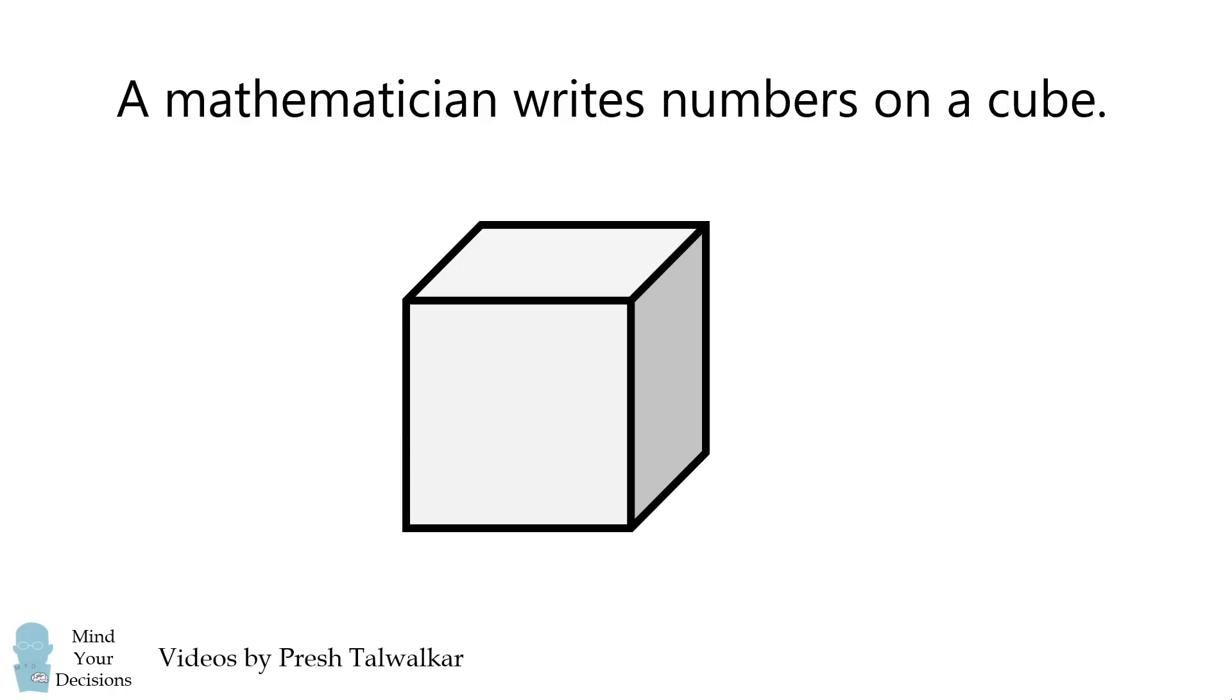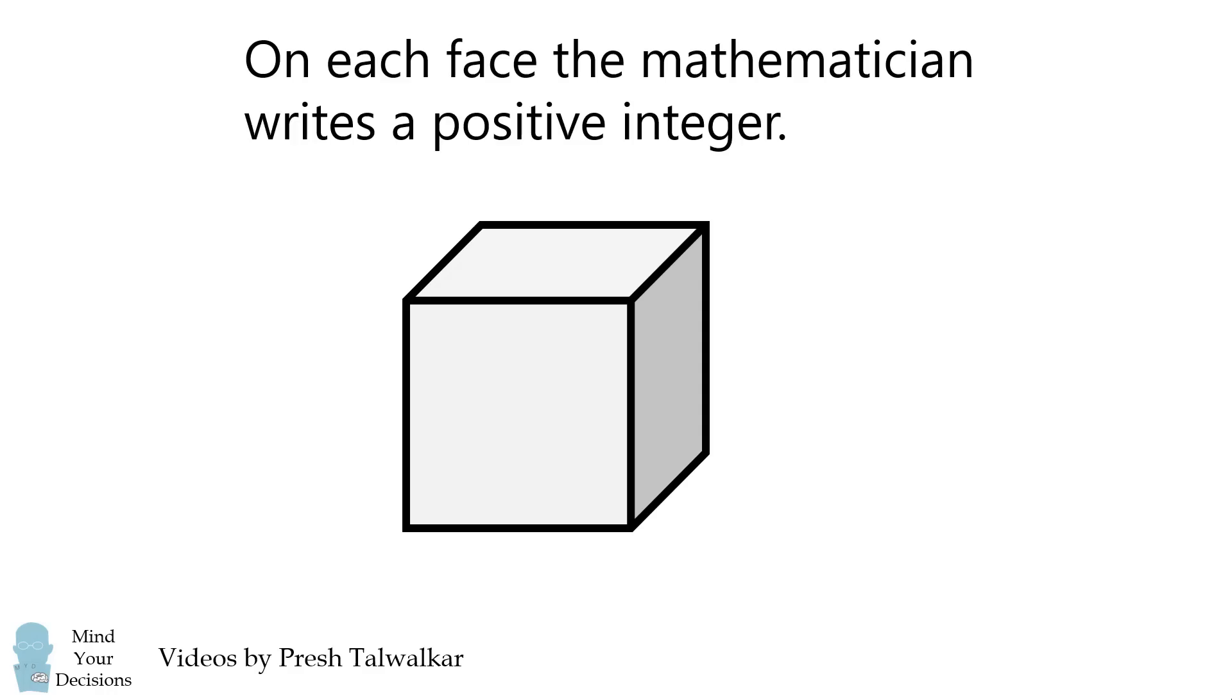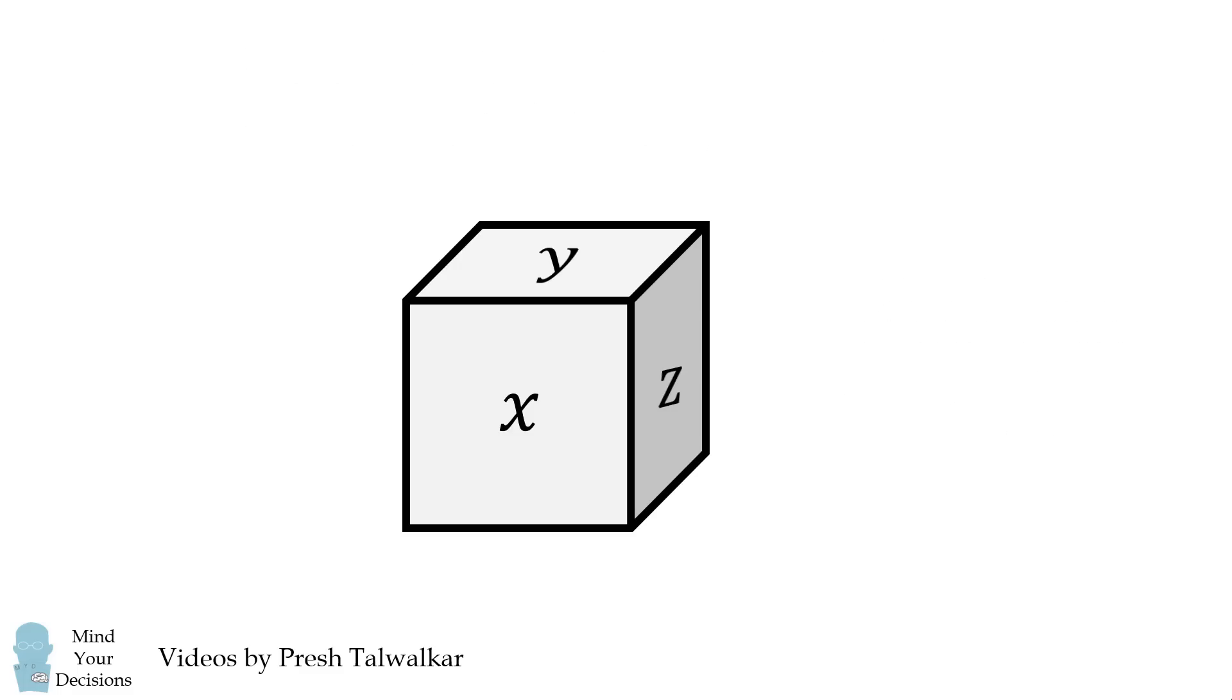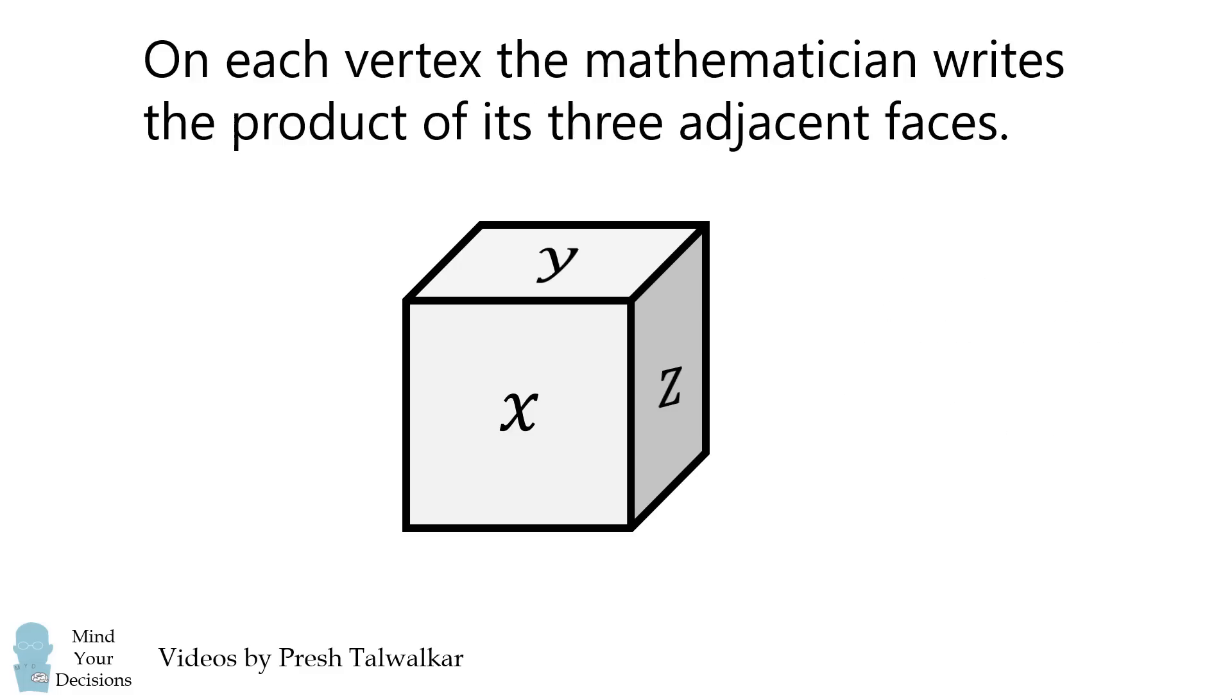A mathematician writes numbers on a cube. On each face, the mathematician writes a positive integer. For clarification, a positive integer is a whole number greater than zero. On each vertex, the mathematician writes the product of its three adjacent faces. For example, in the upper right corner, the mathematician would write the number that's equal to the product of x, y, and z.